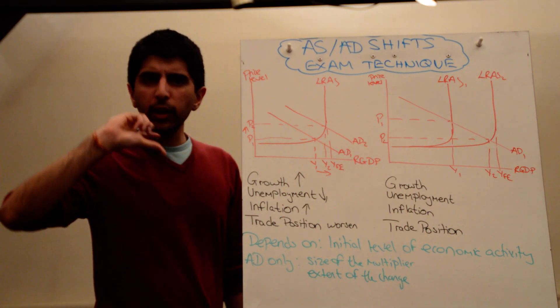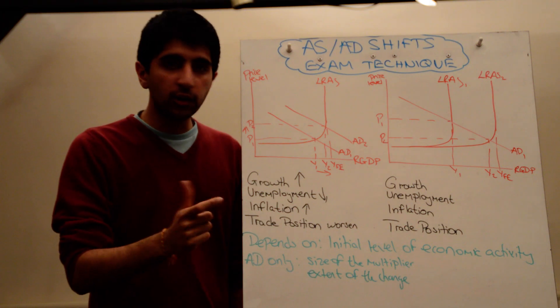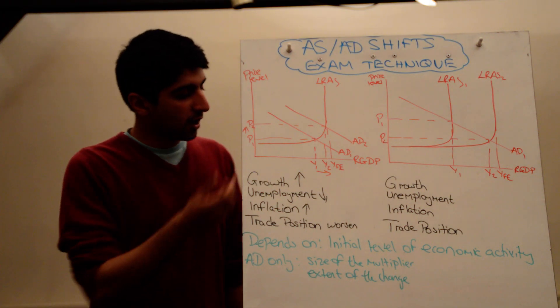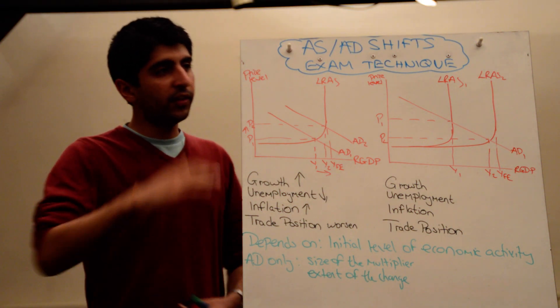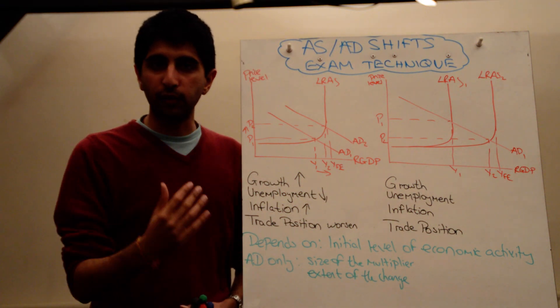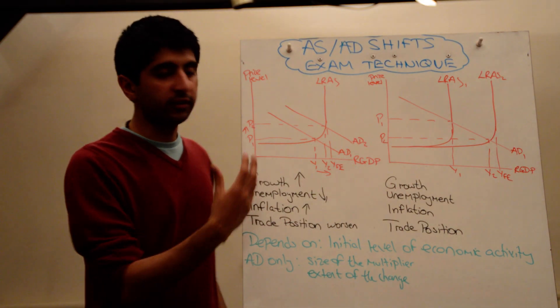And for trade position, the way you work out trade position, you go to inflation. Whatever's going on with inflation, you can make a link to exports. So here, inflation is increasing, which makes exports in the economy less competitive. Therefore, the demand for exports is likely to fall, therefore reducing exports in the economy and worsening the trade position.